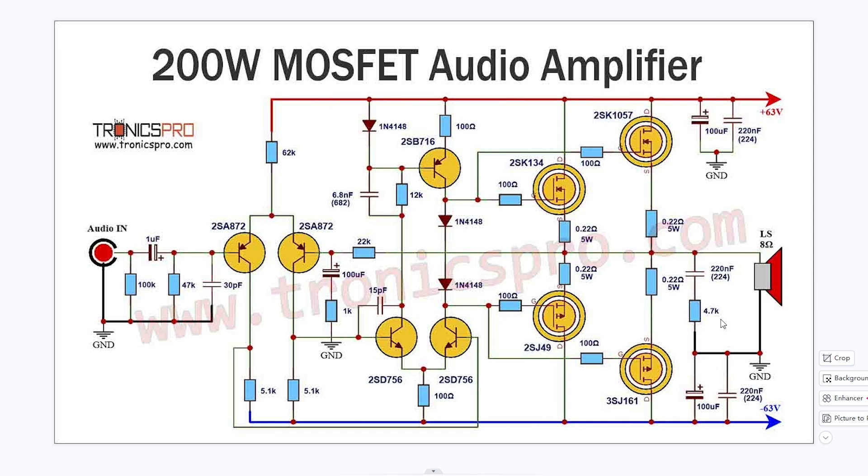Another weird thing here is the value of the resistor they're using in the Zobel network is fairly high at 4k7 and I mean it probably does work but I've never seen that before. Minimum I've seen is 2.7 ohms but not 4.7k.